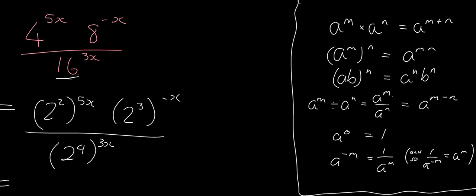Now we can start applying and we're going to be repeatedly applying this rule to start. So this will be 2 times 5x is 10x. Here you're going to have 3 times negative x, so it's negative 3x. And at the bottom, 4 times 3x, so it's 12x. And then we're going to be able to use that and that.